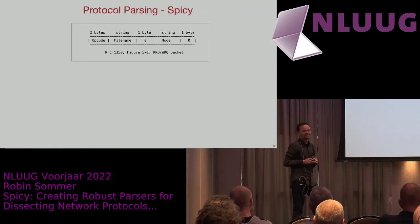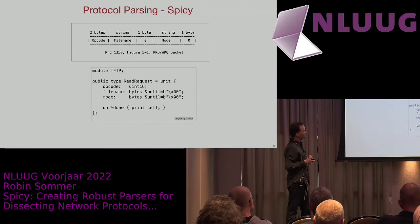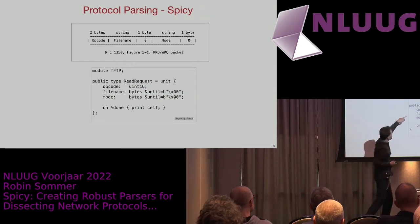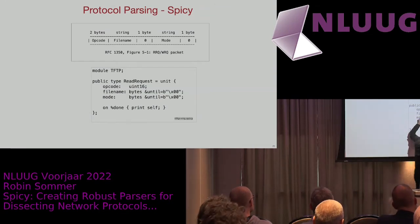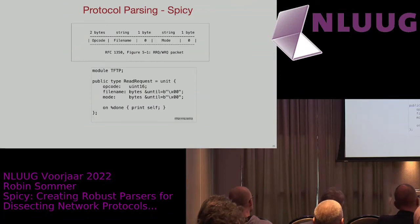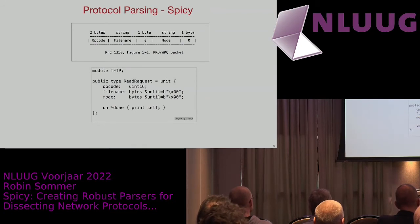Let me go back to my TFTP example — the most trivial protocol. This is the SPICY code. It's a read request. It has this declarative structure with three fields — it says the file name needs to be terminated by a null byte, mode's the same — and then SPICY will at runtime start parsing through. The conceptually most interesting part is this on-parse hook: whenever we are done parsing a read request, this code down there will execute. In this case it's a trivial print statement, but this is SPICY code — you can do stuff here.